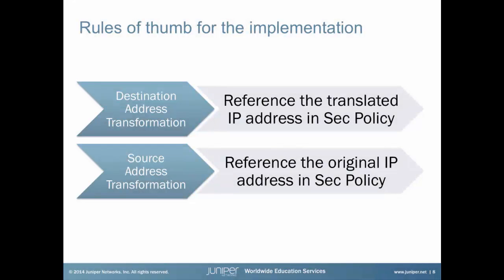The order of operation of the flow module leaves us with two important rules of thumb. When we do a transformation of the destination IP address of a packet — regardless if we are using static or destination NAT configuration elements — then it is imperative to use the transformed IP address in the security policy which permits the traffic. In contrast, when we do a transformation of the source address, we have to reference the original source address in the security policy matching criteria.